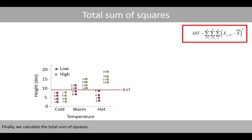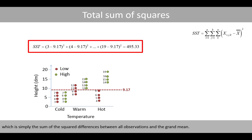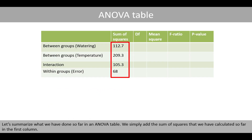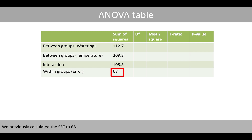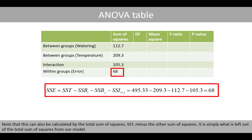Finally, we calculate the total sum of squares, which is simply the sum of squared differences between all observations and the grand mean. Let's summarize what we have done so far in an ANOVA table. We simply add the sum of squares that we have calculated so far in the first column. We previously calculated the SSE to be 68. Note that this can also be calculated as the total sum of squares, SST, minus the other sum of squares — it is simply what is left out of the total sum of squares from our model.